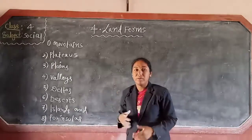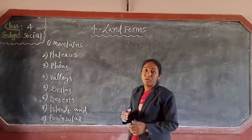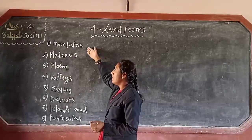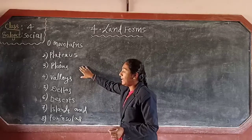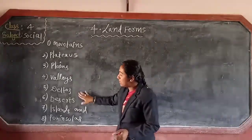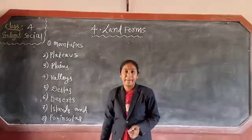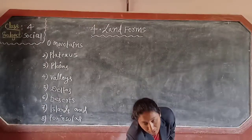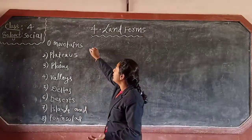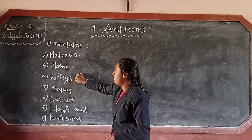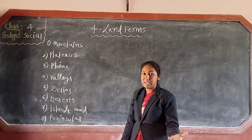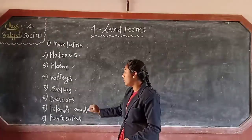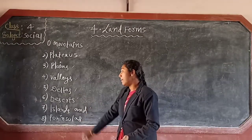The fourth chapter name is Land Forms. So what are the land forms? The first one is mountains, plateaus, plains, valleys, deltas, deserts, highlands, and peninsulas. These are the eight land forms of the world. We have already learned about mountains, plains, valleys, and deltas. So today in this class, we are going to learn about deserts, highlands, and peninsulas.